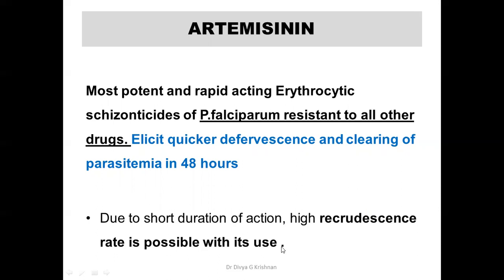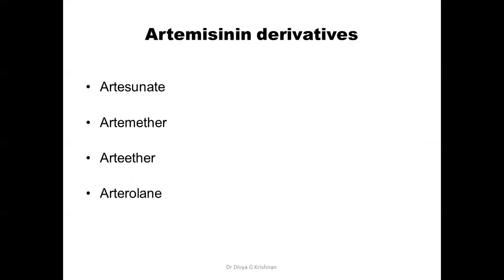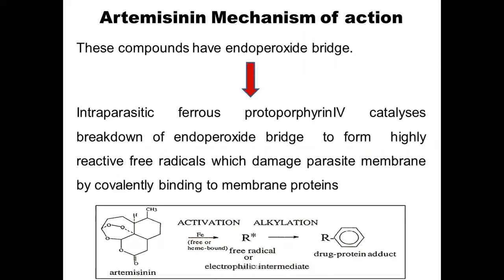The artemisinin derivatives include artesunate, artemether, arteether, and arteolane. You have to remember these examples of artemisinin derivatives.